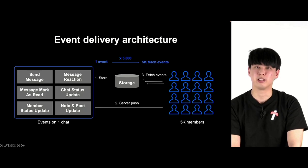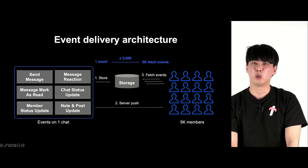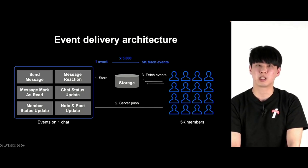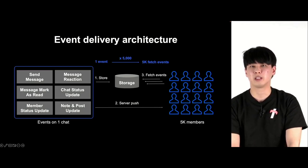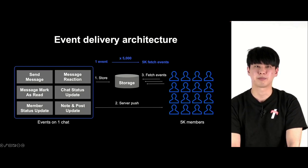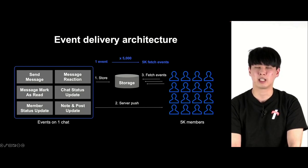The reason why such a large number of API requests occur is deeply related to the event-based architecture of the open chat server. Message send, message reaction, and message read — all of these actions are regarded as events. Every time there is an event, it is stored in storage and sent to users through server push. We send them a message that a new event has occurred. The users who receive the server push call the fetch events API and can add new messages on the screen.